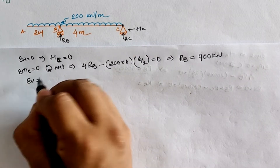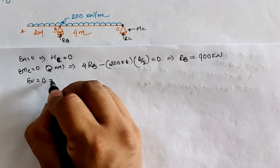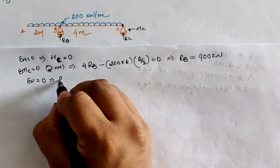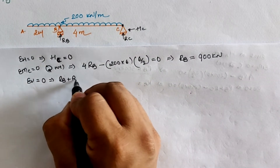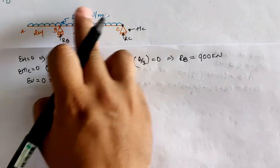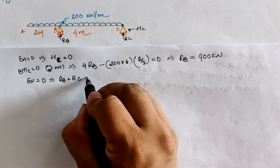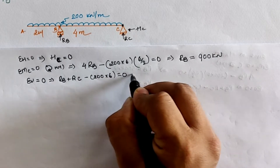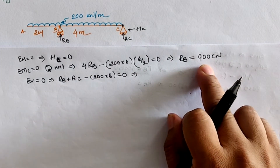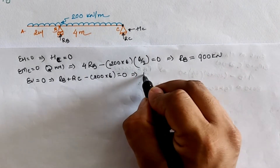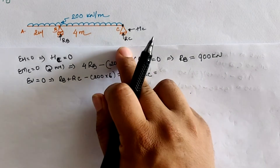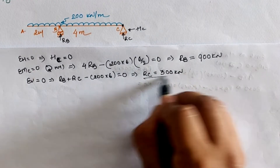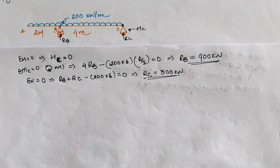Taking the third equilibrium condition sigma V = 0, treating upward forces as positive: RB + RC − 200 × 6 = 0. Substituting RB = 900 kN, we get the reaction at C, RC = 300 kN.